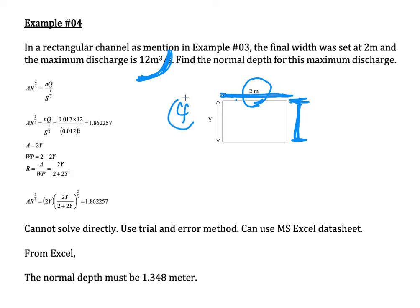If we set y to a very high value, for example 4 meters, the flow of 12 cubic meters per second could pass easily, but we would be wasting material and increasing construction cost. That is why engineers optimize channel dimensions in real life to maximize efficiency.